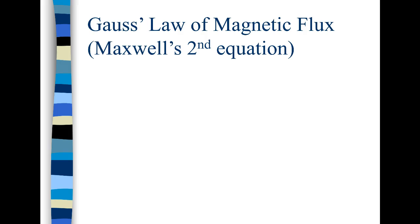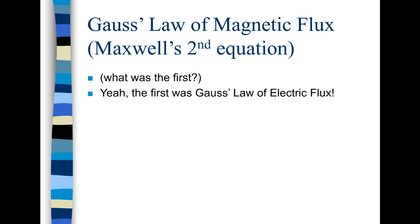Now it turns out that magnetic flux actually leads us to Gauss's law of magnetic flux, and we already studied Gauss's law of electric flux. Gauss's law of magnetic flux is Maxwell's second equation. Well what was the first Maxwell equation? The first was Gauss's law of electric flux which if you remember was that the surface integral of E dot dA is Q enclosed over epsilon naught.